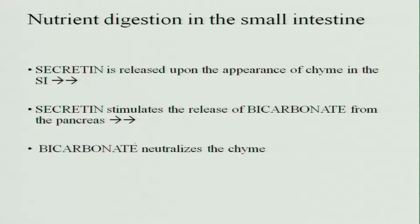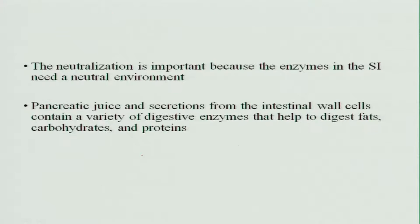Nutrient digestion in the small intestine occurs because of the enzyme secretin, which is released upon the appearance of food in the small intestine. Secretin stimulates the release of bicarbonate produced by the pancreas, which is required to change the pH of the contents in the small intestine. This bicarbonate neutralizes the chyme, and neutralization is very important because the enzymes in the small intestine need a neutral environment — they cannot work in an acidic environment.